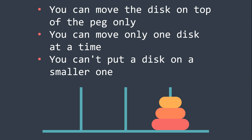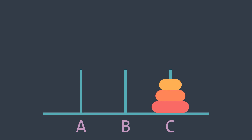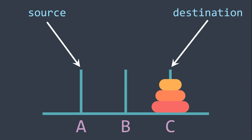Before starting, you must know something. We have the source peg, which is peg A here, the peg from where we take the disks. We also have the destination peg, the one where we place the disks, which is peg C here. And we have the auxiliary peg, the one that will help us for our task, which is peg B here.